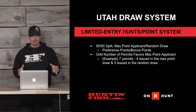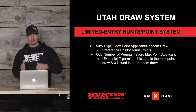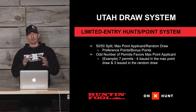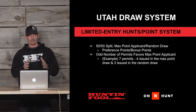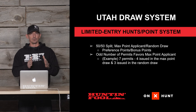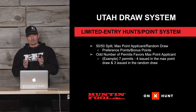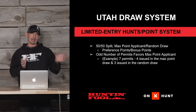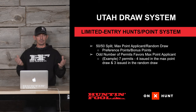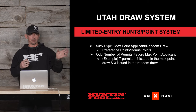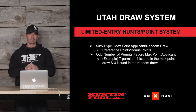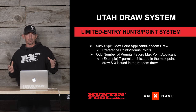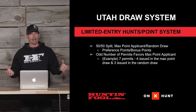One caveat: if there's an odd number of permits, they made a change a few years back. It used to be that the bulk of the permits would go to the random draw, but now the bulk goes to the max point category. For example, with seven permits, four go to the max point applicant pool and three go to the random draw. When there are only five or three tags, this makes a big difference.